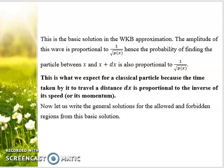The amplitude of this wave is proportional to 1/√p(x), that is 1/√momentum. Hence, the probability of finding the particle between x and x+dx is also proportional to this. This is classically expected behavior, because the time taken by a particle to travel a distance dx is proportional to inverse of its speed or momentum.